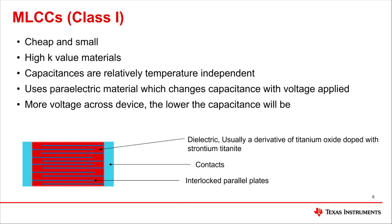The first class of multilayer ceramic capacitors often uses paraelectric materials, which have the quality of becoming non-linearly polarized with an applied electric field. This makes for good K values but a lack of consistency when the electric field changes in amplitude. This is an inherent problem for using these capacitors in audio applications, as lower frequency signals will raise the impedance of the capacitor, creating a larger voltage drop and a change in capacitance, which then distorts lower frequency signals compared to higher frequency. The capacitor structures are interlaced sheets separated by a dielectric material, and in the case of class one ceramics, the material is often variations of titanium oxide doped with strontium titanate.